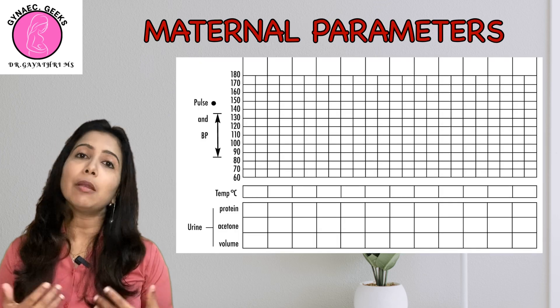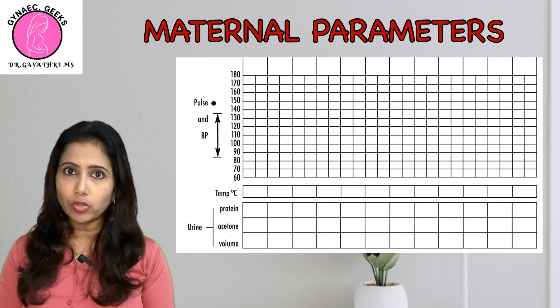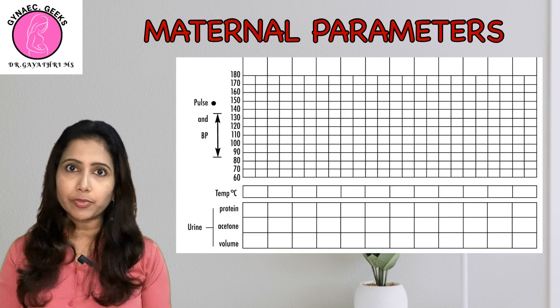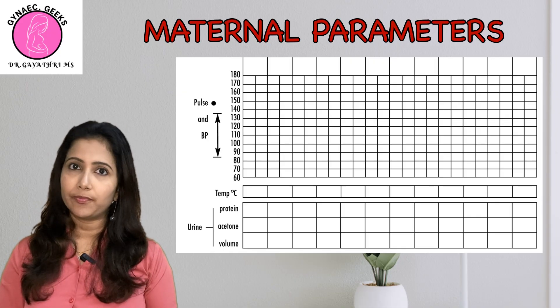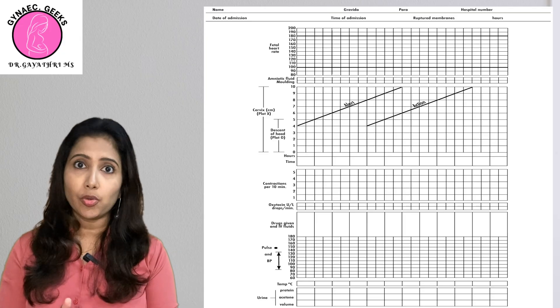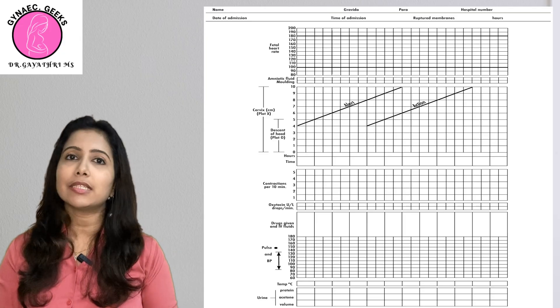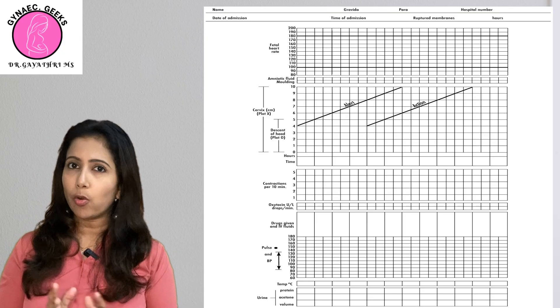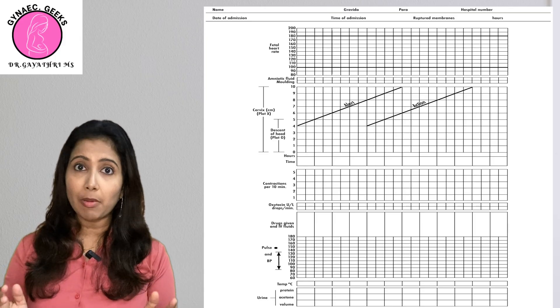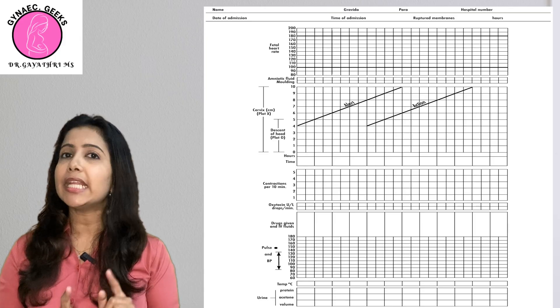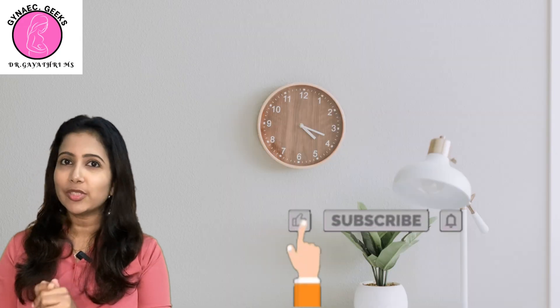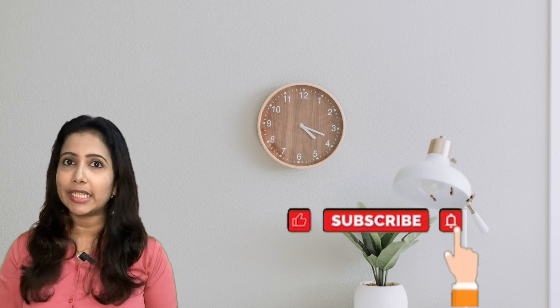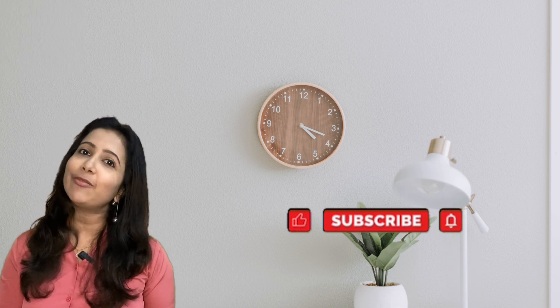Next, medications — any IV fluids, oxytocin, or other medicines the mother receives must be charted. Maternal parameters include maternal heart rate, blood pressure, temperature, and urine reports such as protein and glucose. These constitute all the parameters charted in the partogram. In the next session, we will discuss the various abnormalities seen in the partogram, so please subscribe to be notified when the next video comes.